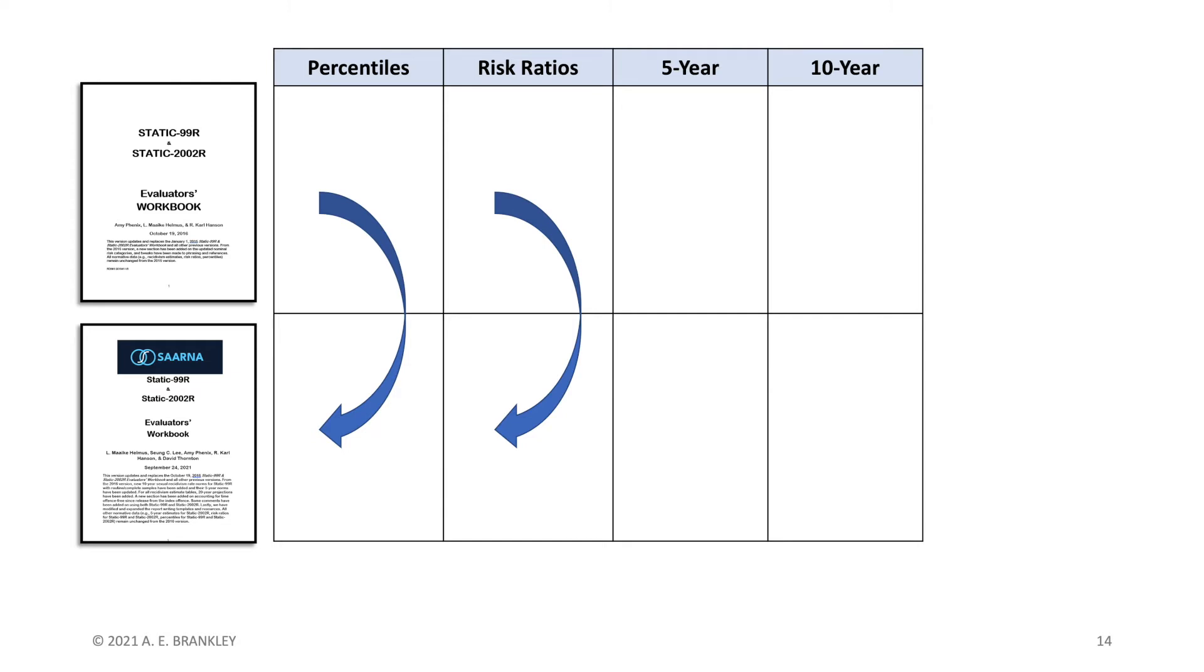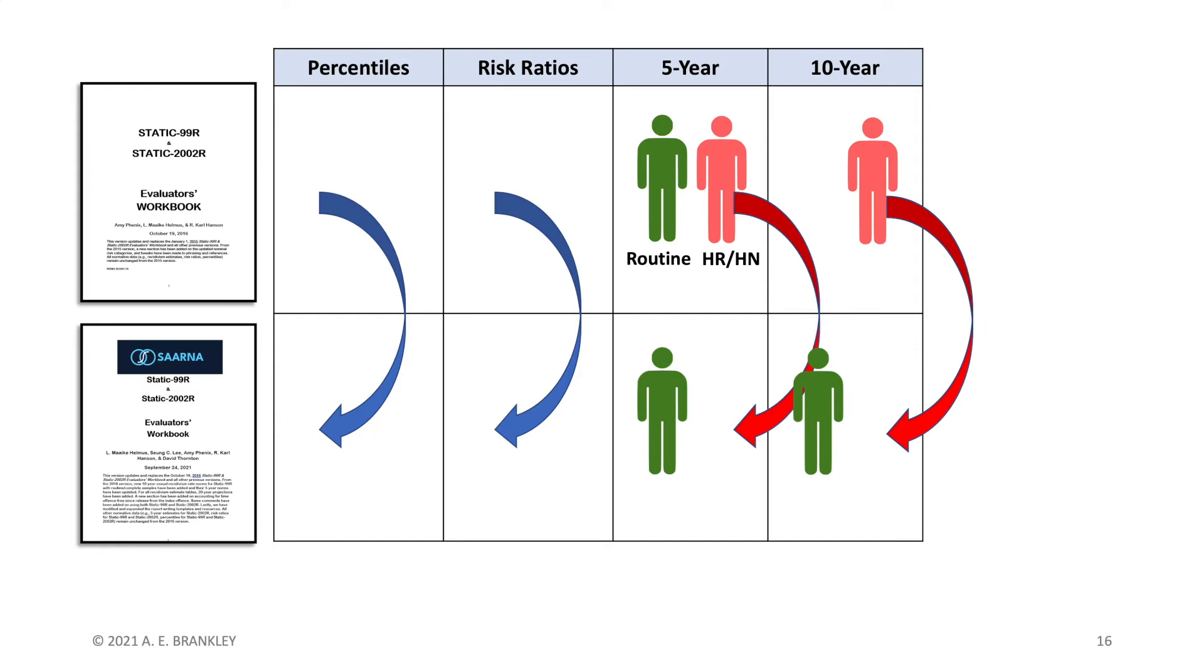The 2016 edition provided 5 and 10 year estimates for the high risk high need samples and 5 year estimates for routine samples. The 5 year routine estimates were updated from a larger set of samples and 10 year estimates were added. The 5 and 10 year high risk high need estimates remain unchanged. 20 year projected estimates were also added for both samples.